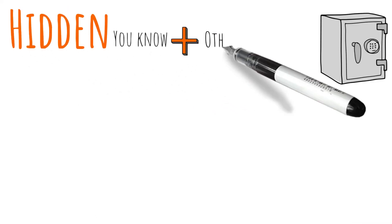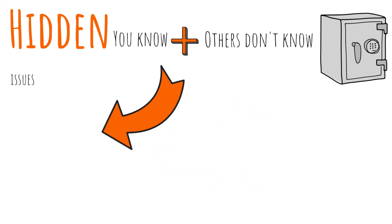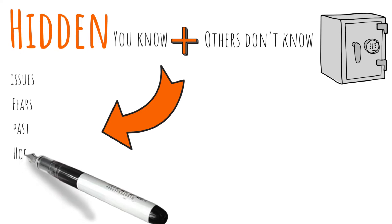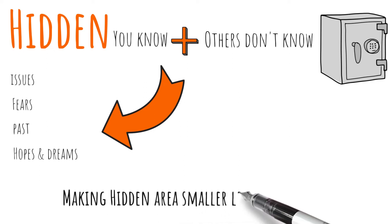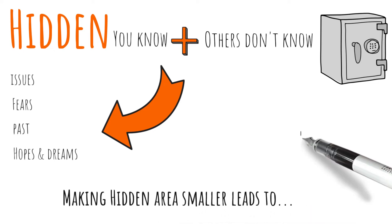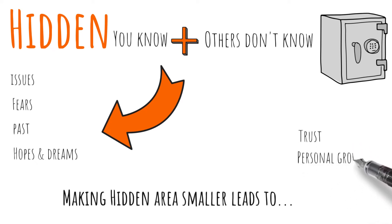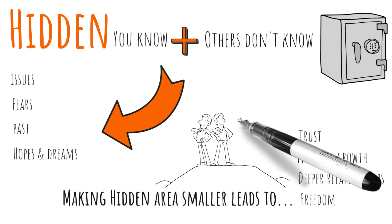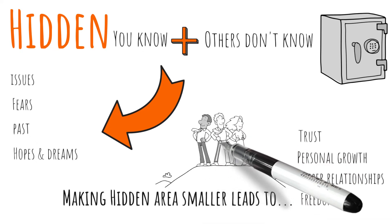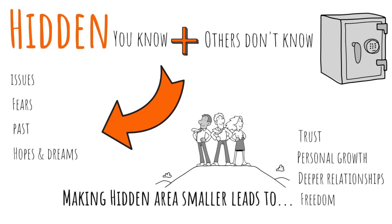Hidden — as the name describes, this area is about what a person knows about themselves but keeps from others: issues or fears, something from your past, hopes, dreams and other secrets. It can also be known as the closed, avoided or facade quadrant. Making the hidden area smaller by revealing things about yourself can lead to greater trust, personal growth and deeper relationships. The type and amount of disclosure you share with personal contacts will differ from that with work colleagues. Don't feel pressured to reveal personal things you are not comfortable with to your workmates, but withholding workplace information can lead to friction, tension and distrust, contributing to malfunctioning teams.